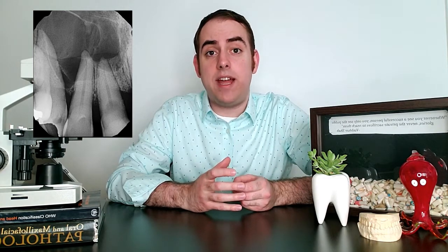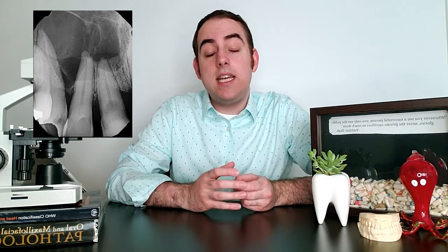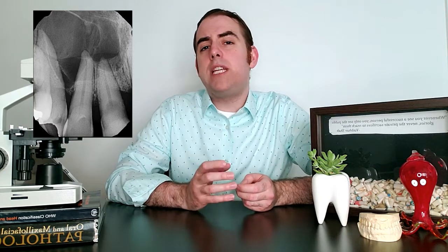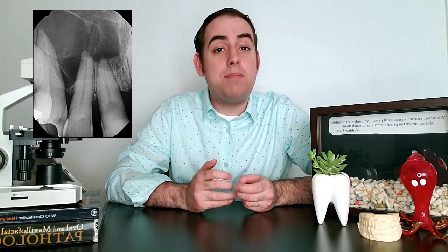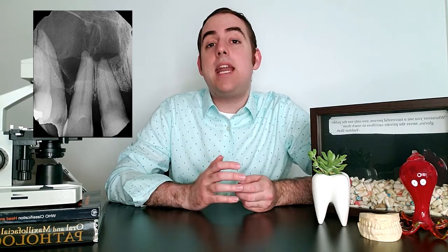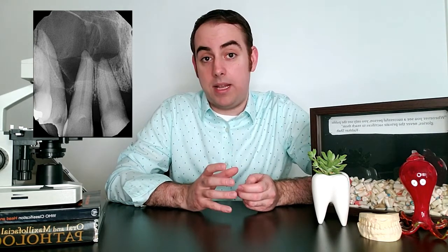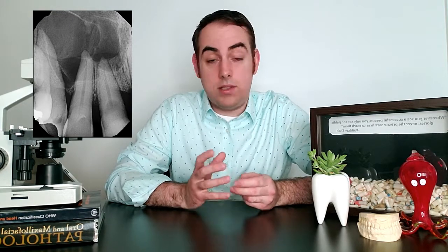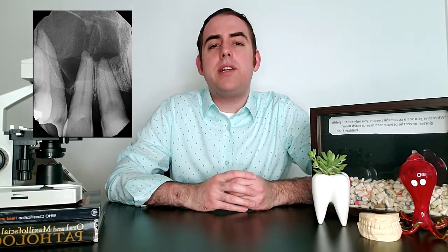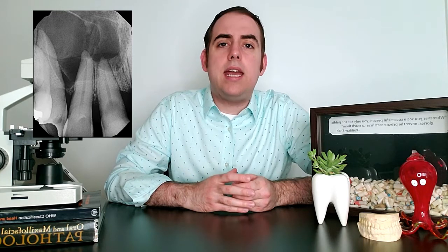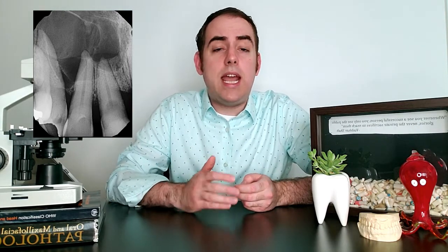Once the pulp is dead, the inside of the tooth becomes like a hollow tube. At a certain point, the pressure from all the inflammation and infection becomes so great that it has to escape. There's usually a very tiny hole at the apex — or tip — of the root, allowing that inflammation to escape into the bone. This recruits further inflammation to wall off the issue, and initially, without an epithelial lining, this is called a periapical granuloma.